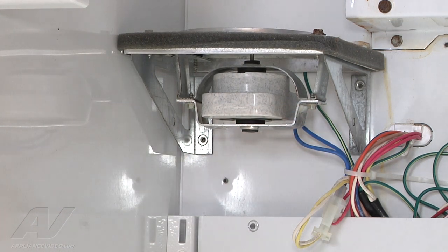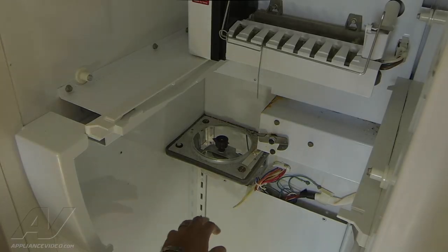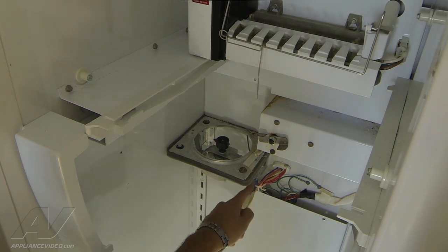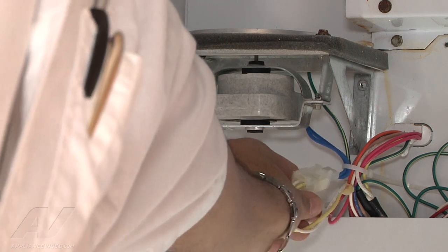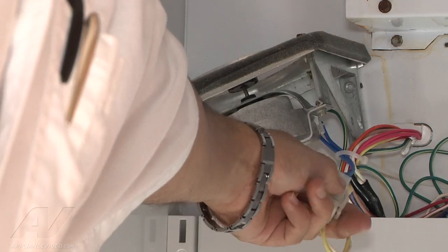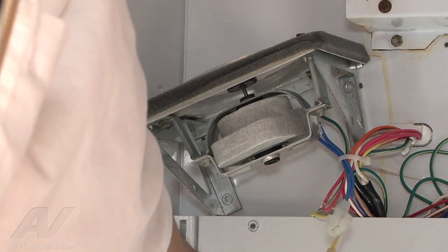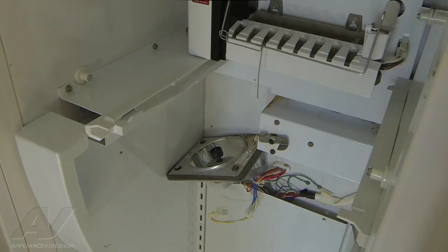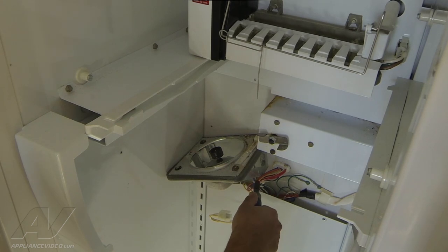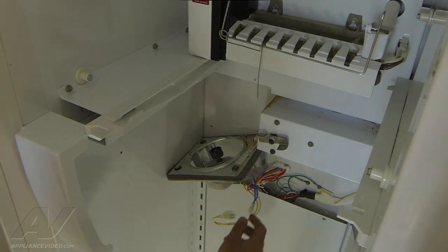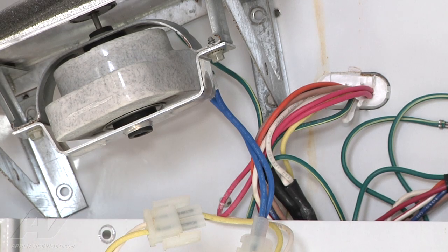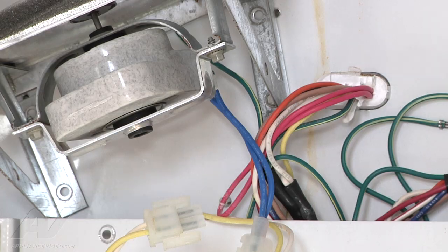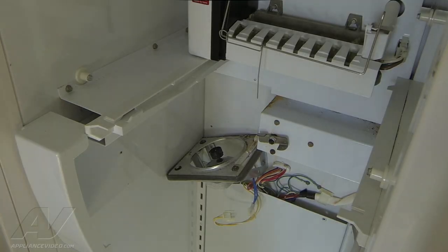Right before I remove the last screw that's securing the bracket and fan motor assembly, I'm going to disconnect the wires here and cut the strap. That way I can remove the fan motor all together. To disconnect the wires, you just depress the two clips. Now I'm going to cut that zip tie that's securing all the wires together. This will be replaced later. We're doing it now so we can remove the evaporator fan motor assembly.